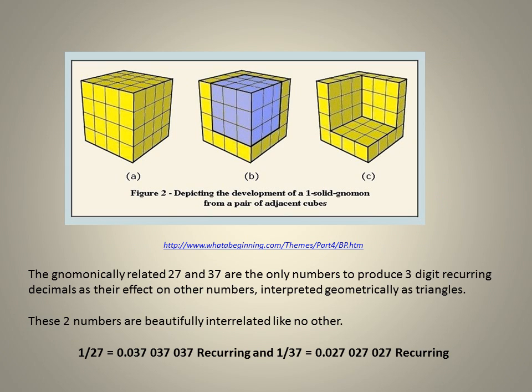The mnemonically related 27 and 37 are the only numbers to produce three-digit recurring decimals as their effect on all other numbers, interpreted geometrically as triangles. These two numbers are also beautifully interrelated like no other: 1 over 27 equals 0.037037037 recurring, and 1 over 37 equals 0.027027027 recurring.